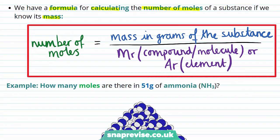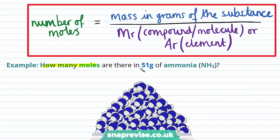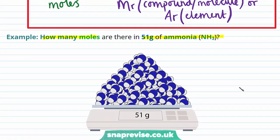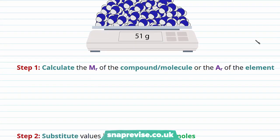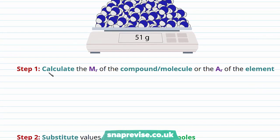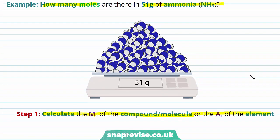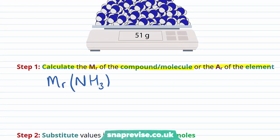Let's look at a quick example using this formula. How many moles are there in 51 grams of ammonia, which is NH₃? This question is asking how many molecules of ammonia, measured in moles, does it take to weigh 51 grams? To work out the number of moles, we follow a two-step process. The first step is to calculate the relative formula mass of ammonia by summing the relative atomic masses: one lot of nitrogen with a relative atomic mass of 14, and three lots of hydrogen each with a relative atomic mass of 1, giving us a total relative formula mass of 17.